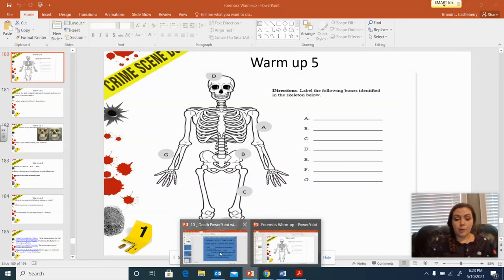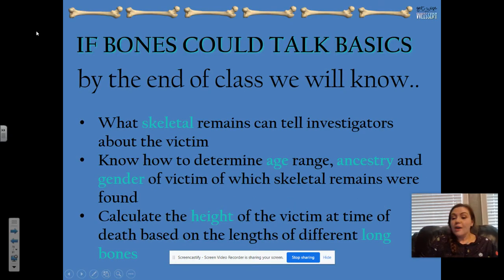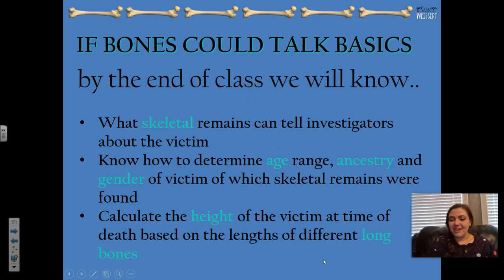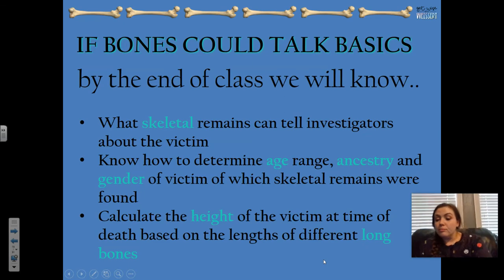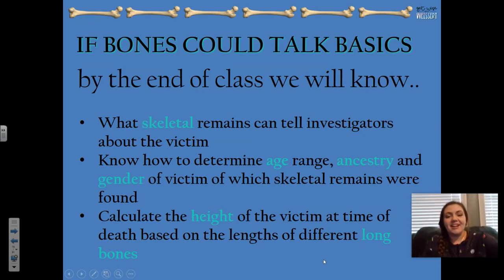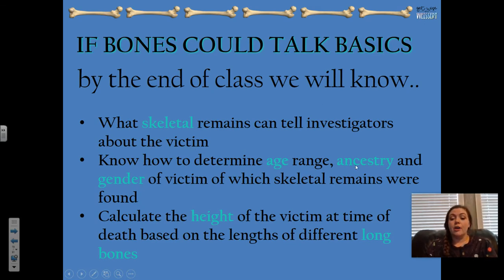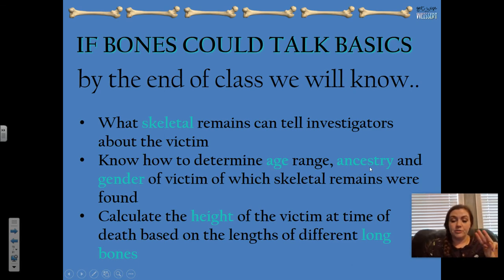We're going to continue on — this might be the last set of notes for finishing up our anthropology unit on the deaf. If bones could talk: by the end of class, you will know what skeletal remains can tell investigators about a victim — how to determine age range, ancestry, sex, and calculate height based on the lengths of different long bones. Previously we looked at ancestry and long bones for height, so today we're going to look at age and how to tell the difference between male and female.